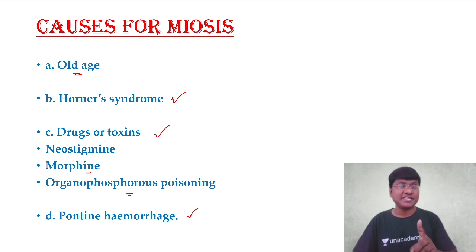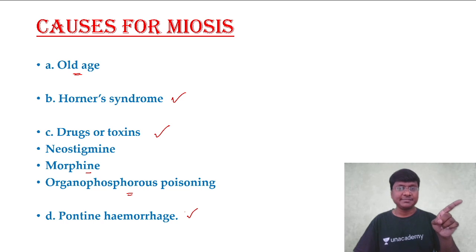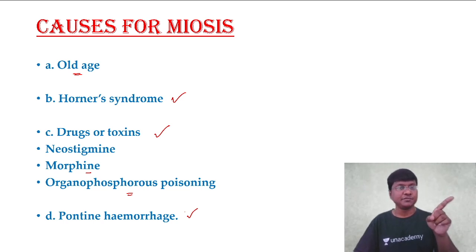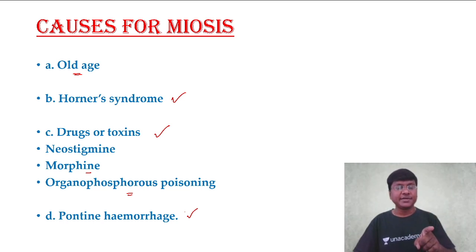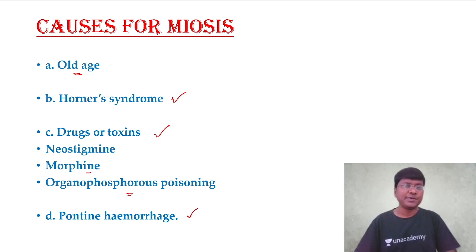Remember this point: in midbrain damage, which is a part of the brainstem, you have mydriasis — dilatation of the pupil. Whereas in pontine hemorrhage, which is also a part of the brainstem, the individual will have pinpoint pupils, that is miosis.